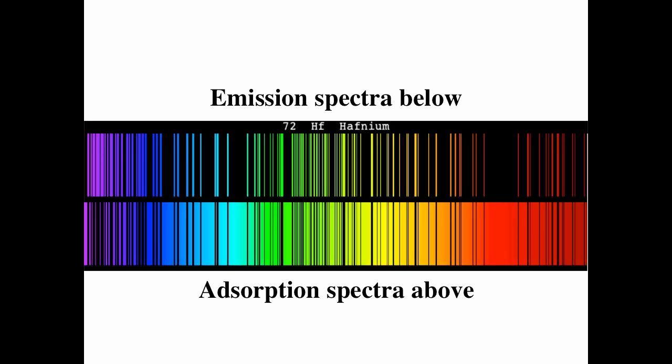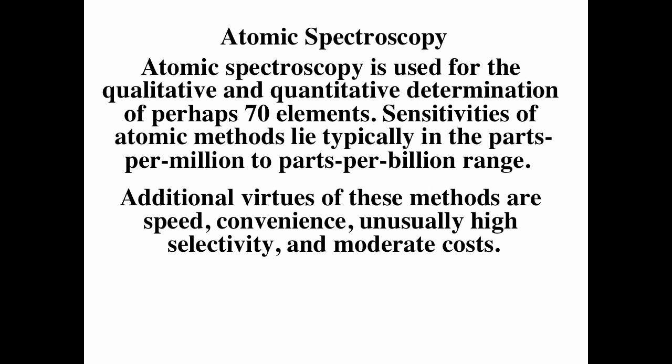Atomic spectroscopy is really pretty cool. You can use it to qualitatively and quantitatively determine perhaps 70 different elements, with sensitivities of part per million or part per billion range. If you want to know what's in your sample, atomic spectroscopy is very good.